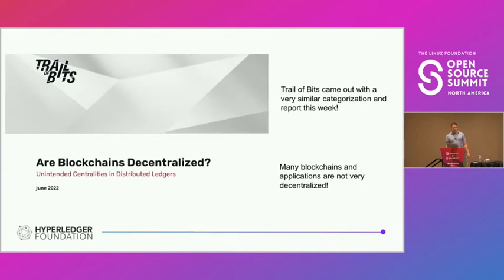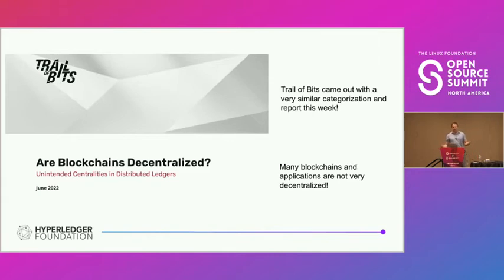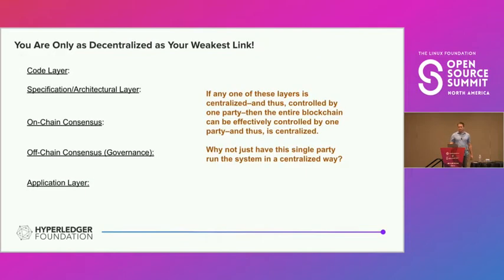Trail of Bits recently came out with a very similar categorization and report, and they certainly think that many blockchains and applications are not very decentralized — it's hard to disagree. The core point is that if any one of these layers is centralized and controlled by one party, then the entire blockchain is effectively controlled by one party. If any layer is centralized, you have to ask: why not just have this single party run the system centrally?